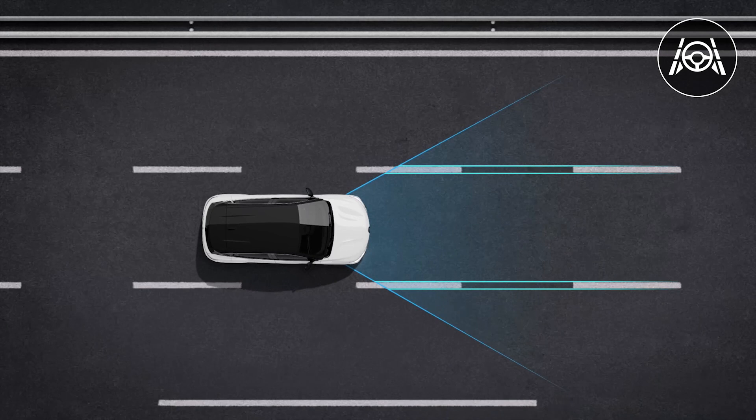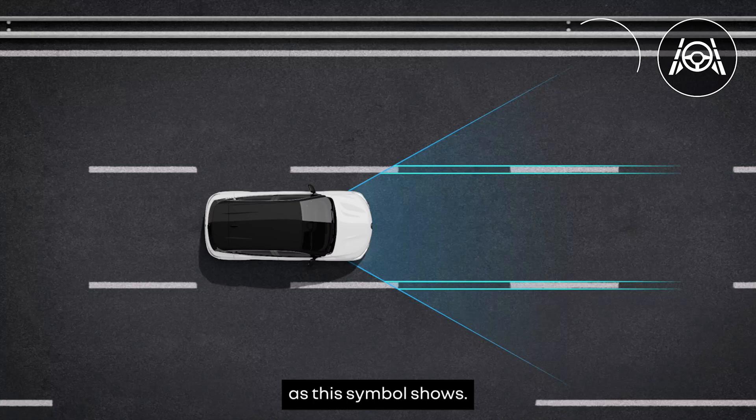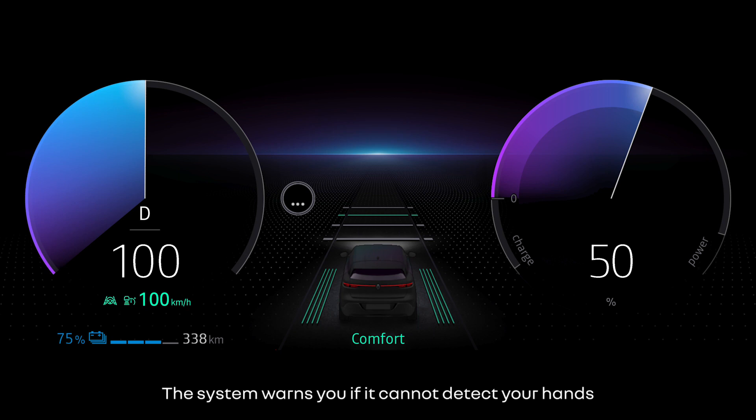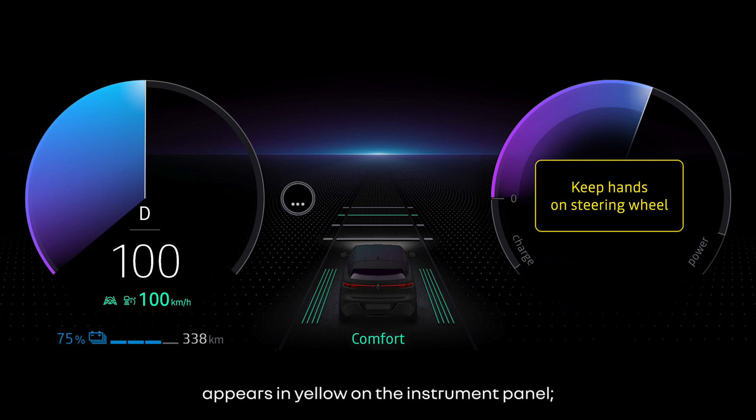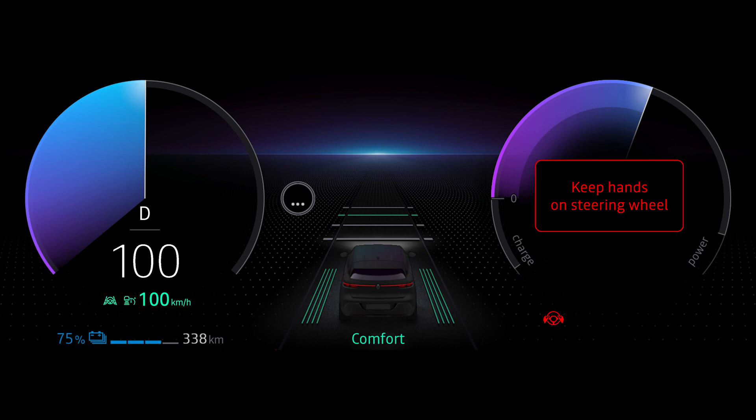When using Lane Centering, you must still have your hands on the steering wheel, as this symbol shows. The system warns you if it cannot detect your hands on the steering wheel. After 15 seconds, the message 'Keep Hands on Steering Wheel' appears in yellow on the instrument panel. After 30 seconds, the indicator light and message appear in red on the instrument panel, accompanied by an audible signal which gets progressively louder.